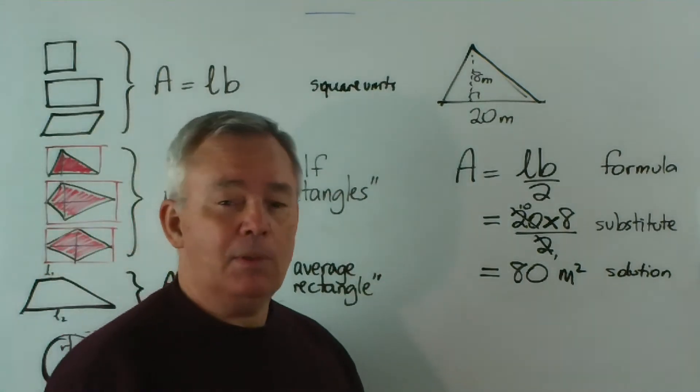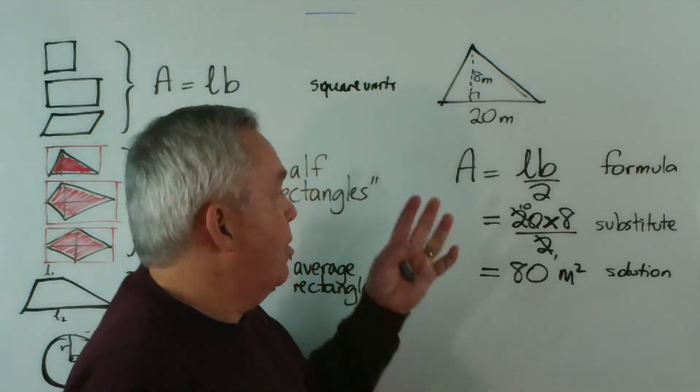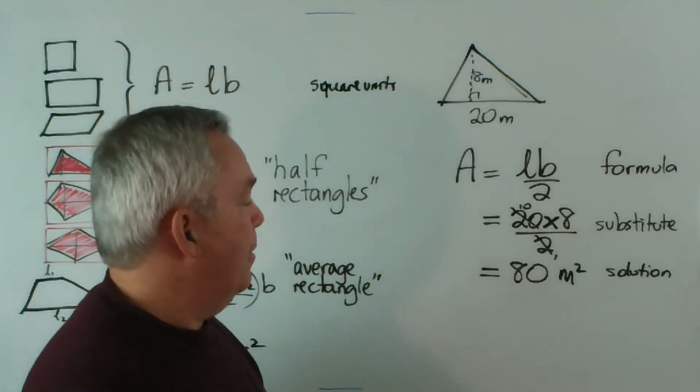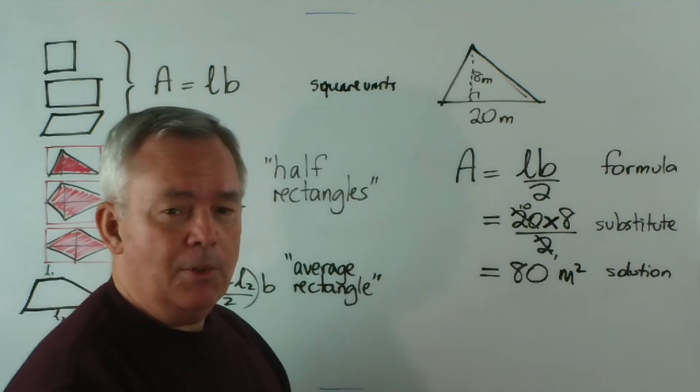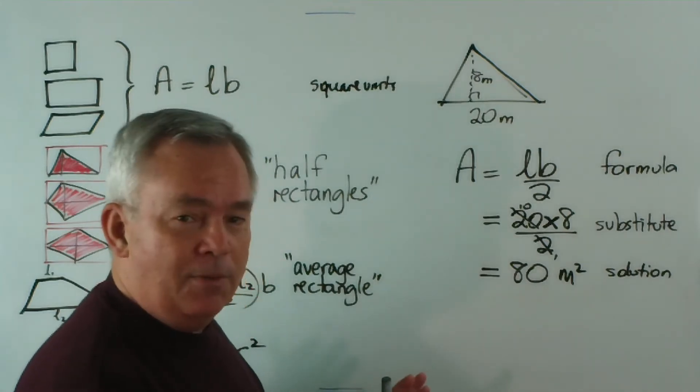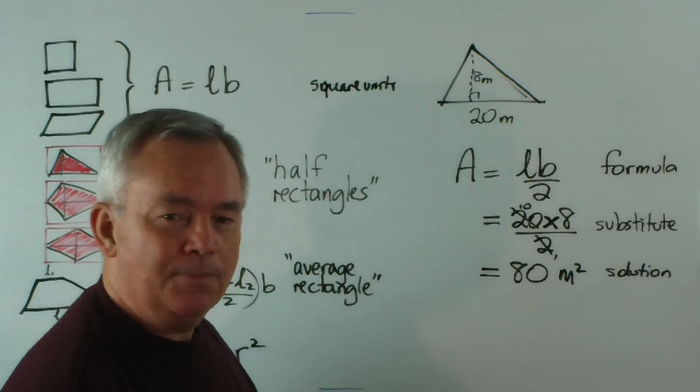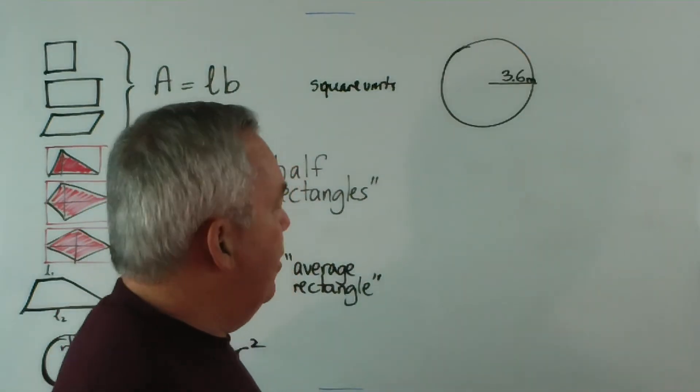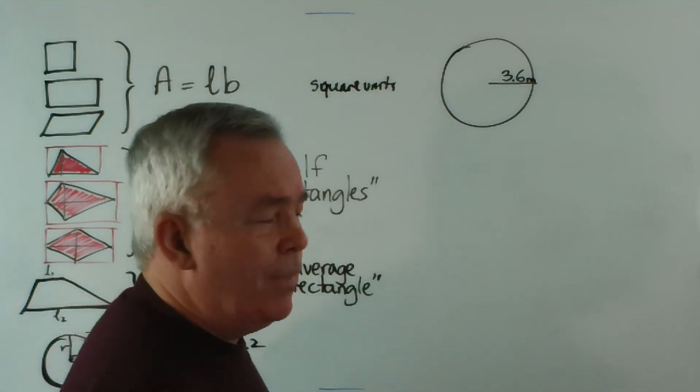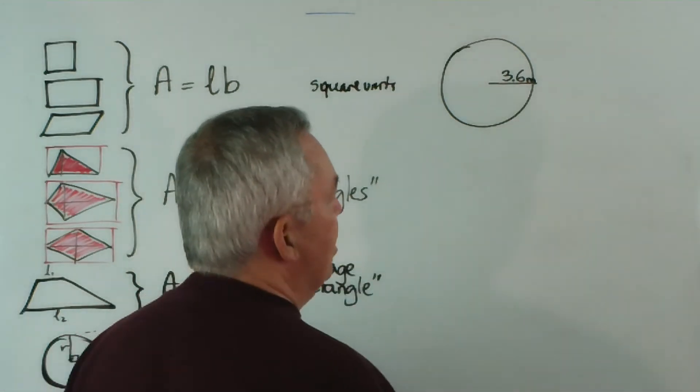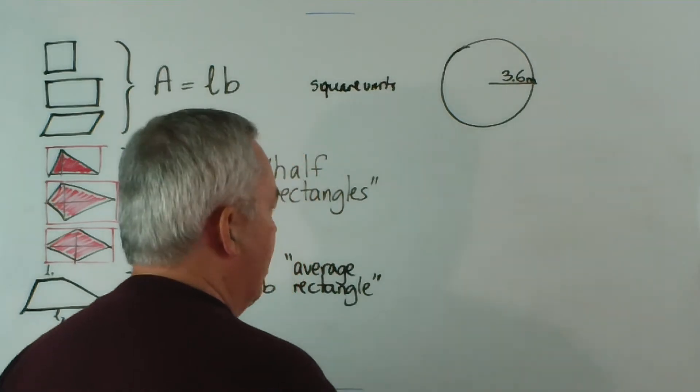I'm going to give one more example. It's a little more complex, just because the numbers aren't so nice. Because there's one more thing I wish to share, and that will be the end of our video, so please watch it. I think you'll find it useful. The next shape we're going to find the area of is this circle here, with a radius of 3.6 meters.